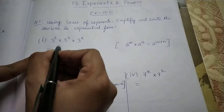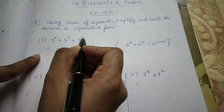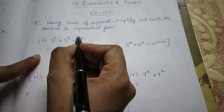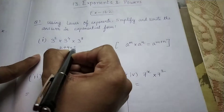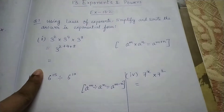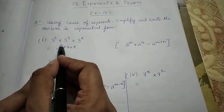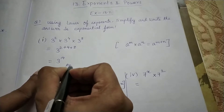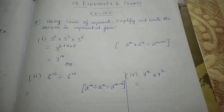So the same thing we are going to apply here. If the base is same and powers are different, you just need to add them. Write the base as it is and add all the powers. I have written 3, and I add all the powers: 2 plus 4 plus 8. That gives 10 plus 4, which is 14. So the answer is 3 to the power 14.